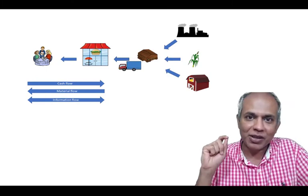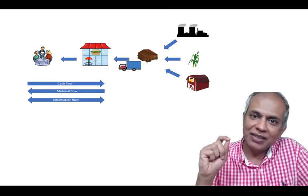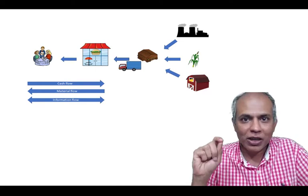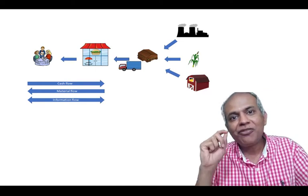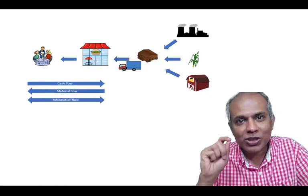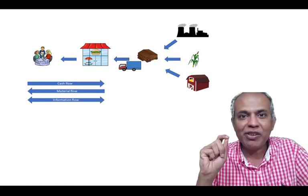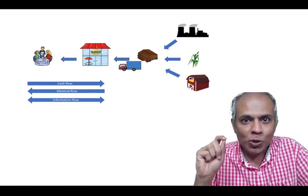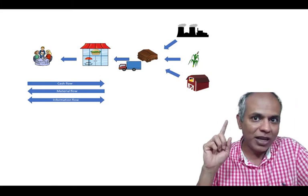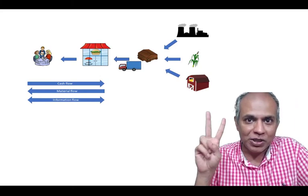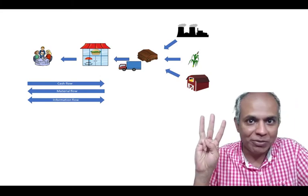Supply chain management is about actively controlling and monitoring selective flows or selective portions of the supply chain, where we manage or control the three flows: cash flow, material flow, and information flow.